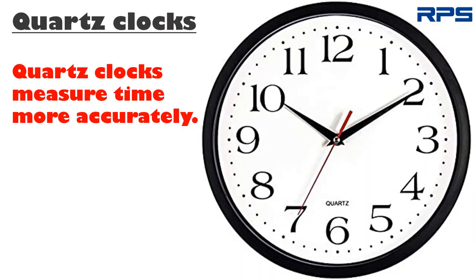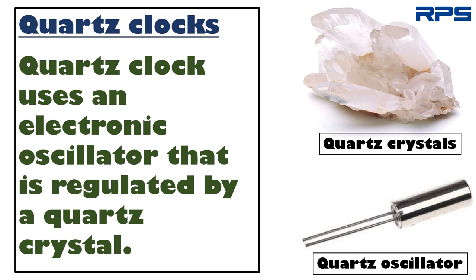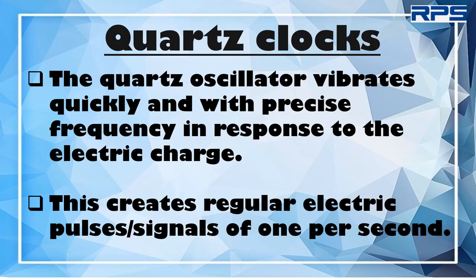Now let us study about another modern device for the measurement of time: the quartz clock. Quartz clocks measure time more accurately as compared to pendulum clocks. A quartz clock uses an electronic oscillator that is regulated by a quartz crystal. The quartz oscillator vibrates quickly and with precise frequency in response to an electric charge. This creates regular electric pulses or signals of one per second.